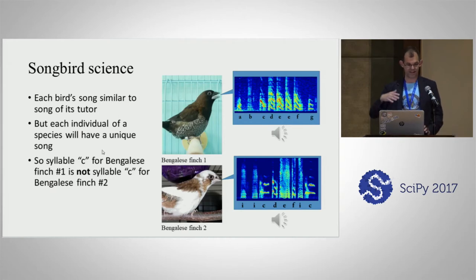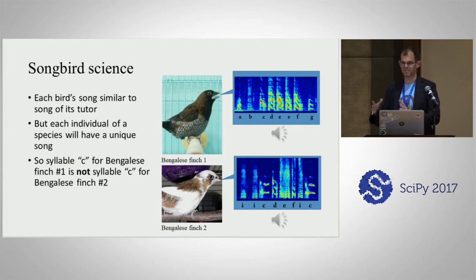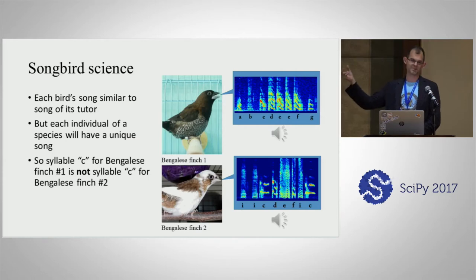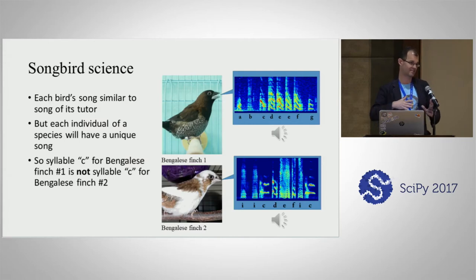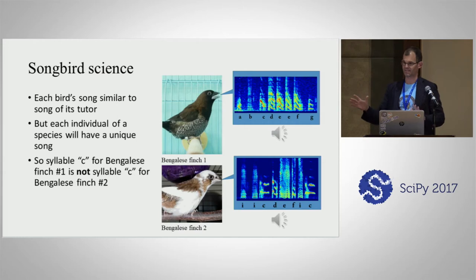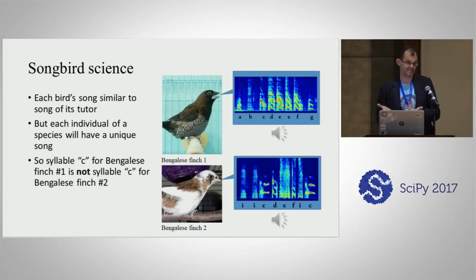Each bird song is similar to the song of its tutor, but even within a species the songs can be very different. Just because I call some syllable in Bengalese finch song 1C doesn't mean that another Bengalese finch's syllable C is necessarily the same. The point is we need a machine learning algorithm that can generalize across a bunch of different songs, especially if we want to apply this to different species.